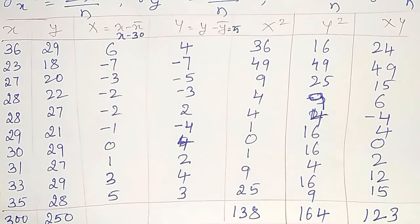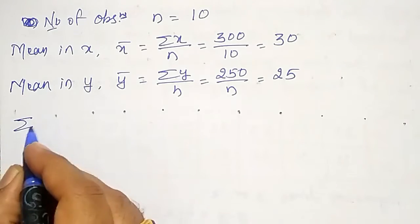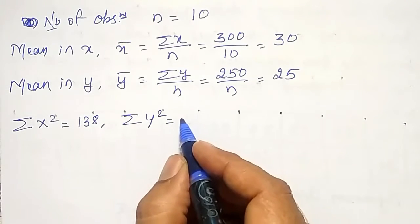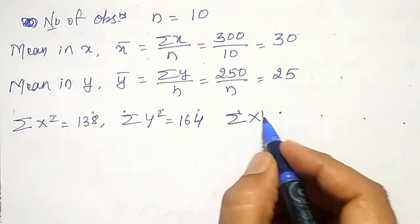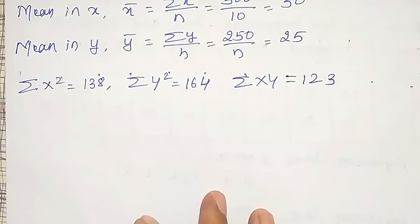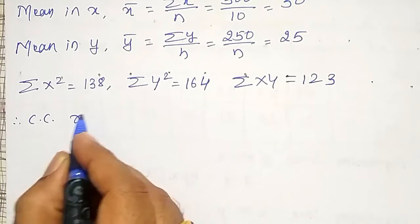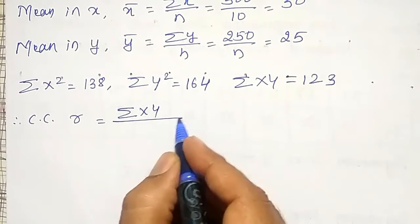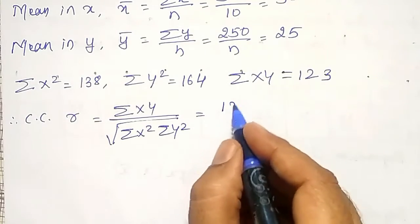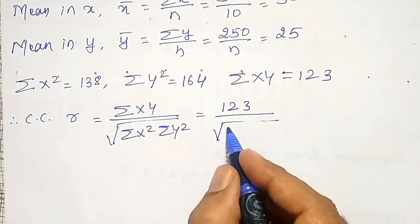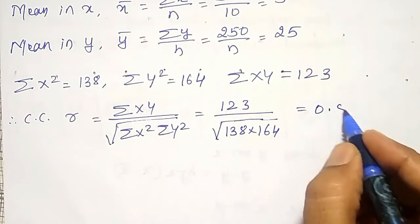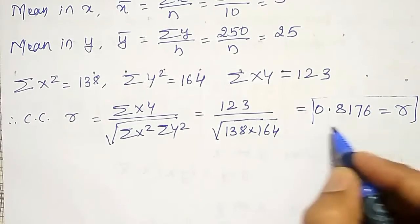Using those values, I will calculate the remaining terms. Summation X-square equals 138, summation Y-square equals 164, summation XY equals 123. Therefore, correlation coefficient R equals summation XY divided by square root of summation X-square into summation Y-square. That is 123 divided by square root of 138 into 164. I am going to get R equals 0.8176.